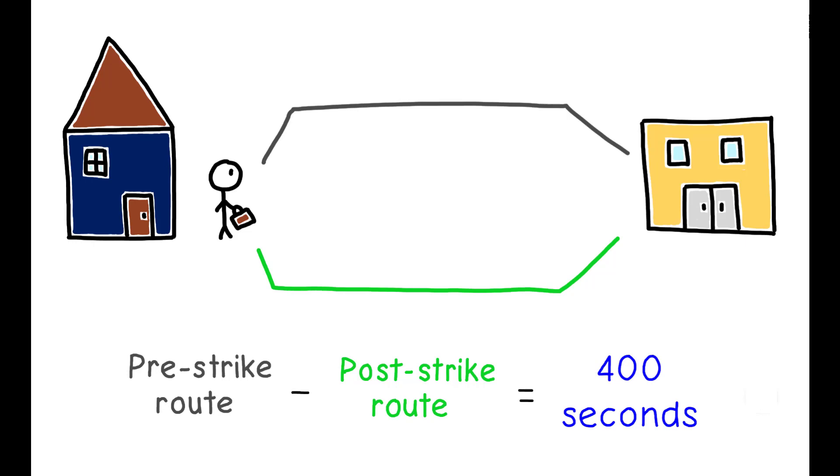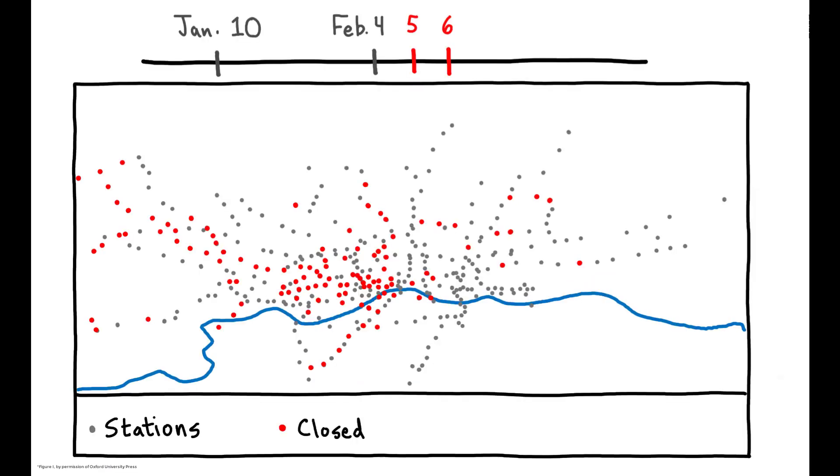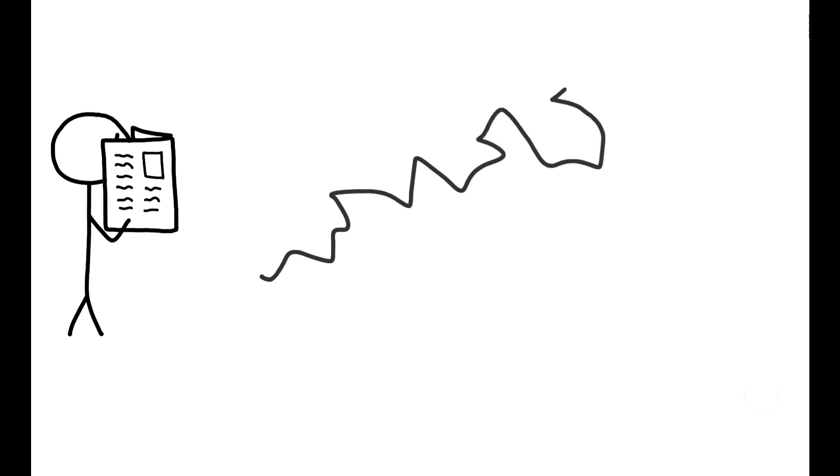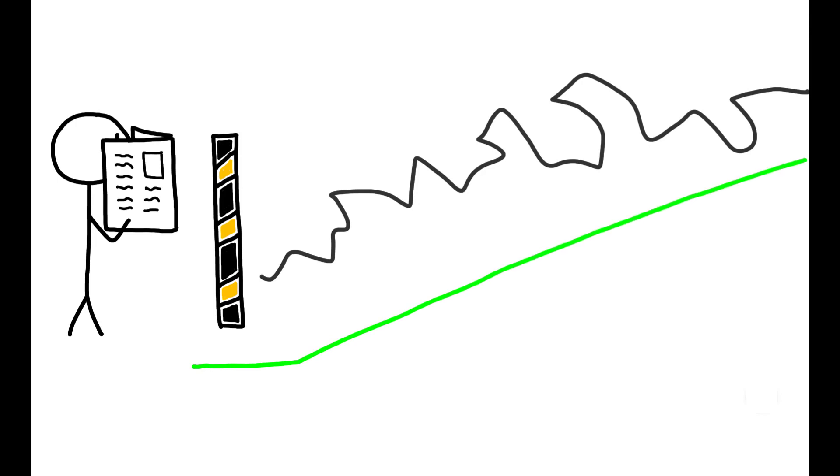In interpreting these results, it is notable that the strike only lasted 48 hours, making it unlikely that these changes in behavior can be attributed to commuters forming new habits during the strike. Instead, it appears that many individuals were stuck in sub-optimal routes prior to the strike, and only discovered a new and better one when forced to experiment.